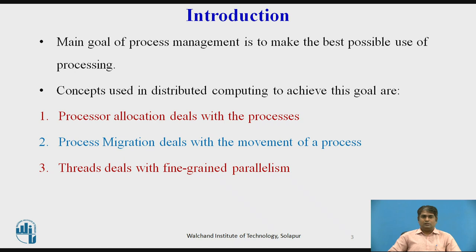Processor allocation deals with the process of deciding which process should be assigned to which processor. Process Migration deals with the movement of a process from its current location to the processor to which it has been assigned. Threads deal with fine-grained parallelism for better utilization of the processing capability of the system.